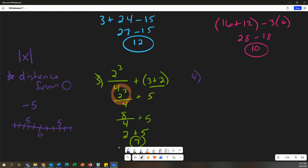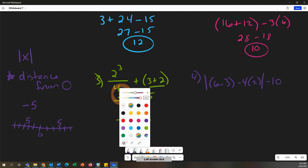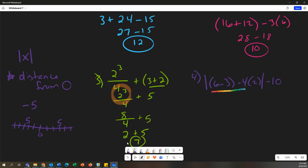So on the fourth one, we're going to have the absolute value of 6 minus 3 minus 4 times 2, close your absolute value, minus 10. So absolute values you actually treat just like parentheses. We are going to do all of this stuff inside the absolute value first. So 6 minus 3 would be 3, minus 4 times 2 is 8. 3 minus 8 would be negative 5.